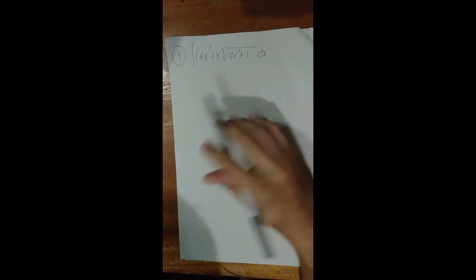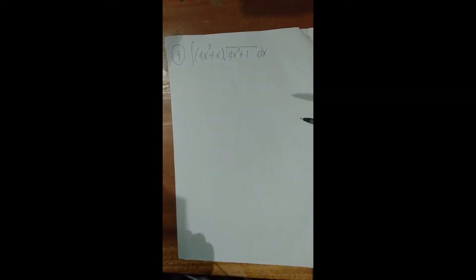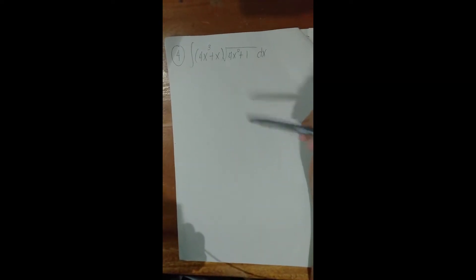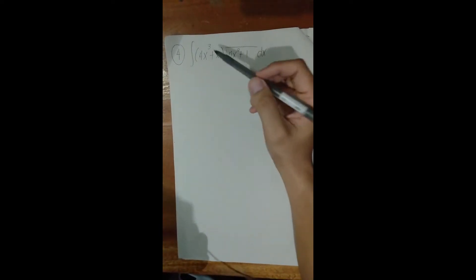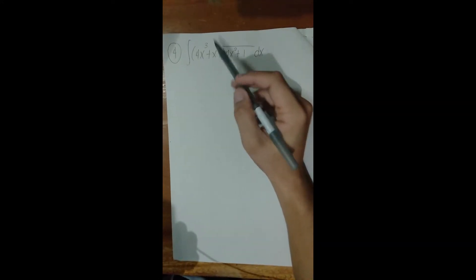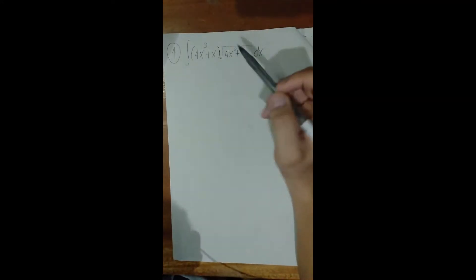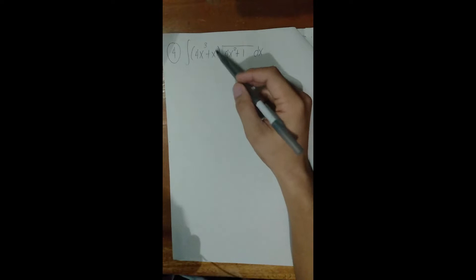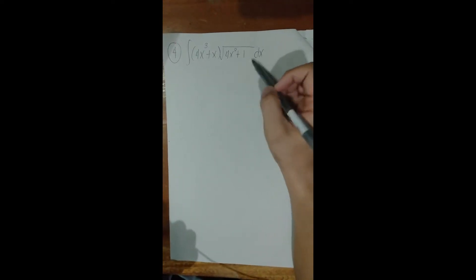Let's try to solve problem number four. The function is the integral of (4x³ + x) multiplied by the square root of (4x² + 1), dx.